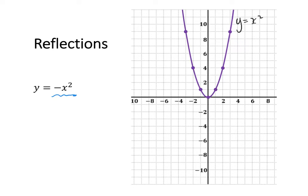Negative 3 and 9 will become negative 3 and negative 9. Negative 2 and 4 will become negative 2 and negative 4. Negative 1 and 1 will become negative 1 and negative 1. My turning point will remain at 0, 0.